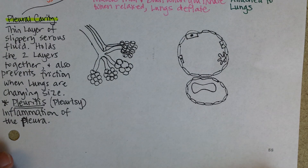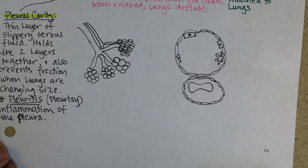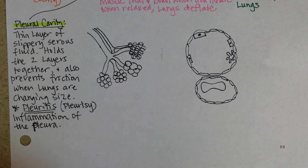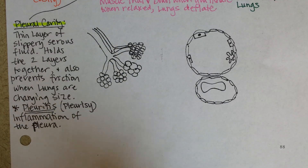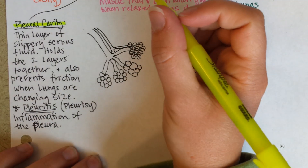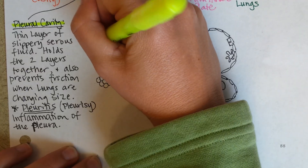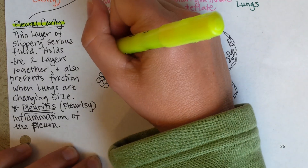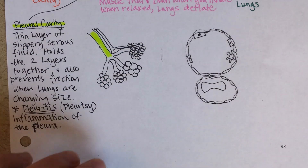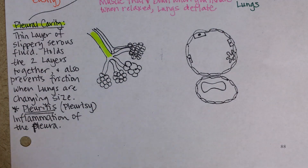Once the bronchioles get very, very, very tiny, they're called terminal bronchioles. You've probably heard that word terminal meaning the end of something, like a terminal at an airport, or if someone has terminal cancer, it means the end. So these terminal bronchioles are the smallest ones.